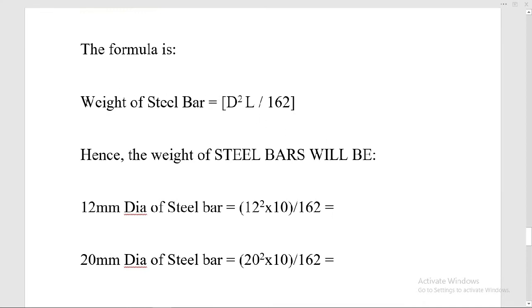First we will use the formula to calculate the weight of the steel bar, because we are given the length in meters. We have a 10 meter length of steel bar. So the formula is D² × L divided by 162. Hence the weight of the 12 millimeter diameter steel bar: